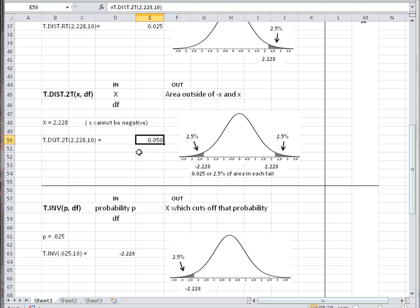For this, if we put in 2.228 with 10 degrees of freedom, the result is 5%, 0.05, which means 2.5% is to the right of 2.228, and 2.5% is to the left of minus 2.228. So the result is the area in both tails together.